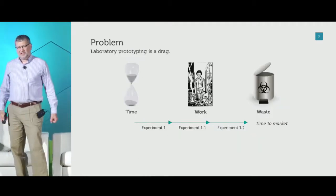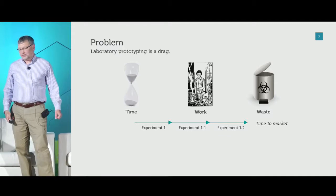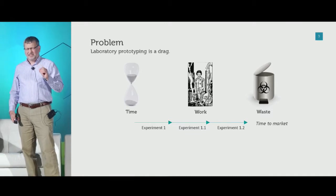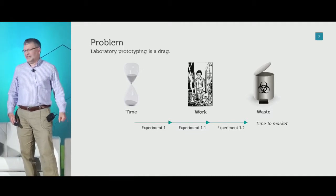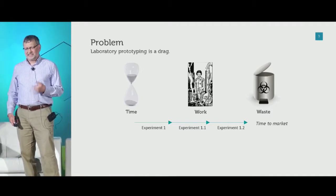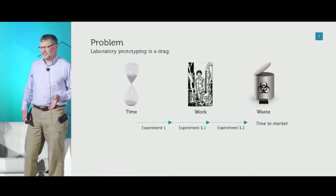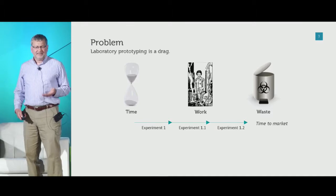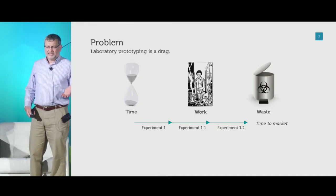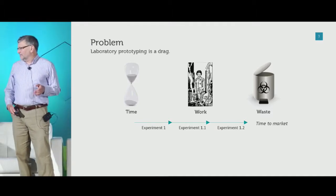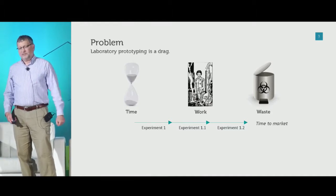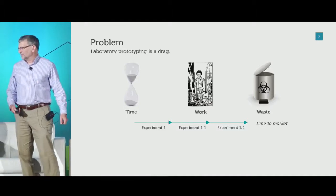They're going to have to prototype and get their product just right prior to mass production. The problem is that laboratory prototyping is pretty slow. Experiments in the laboratory take time — it takes several weeks to a month just to grow maybe a millimeter worth of tissue at best. During that time, you have to attend to these experiments, do the measurements, and you create a certain amount of waste. The time to market depends upon this learning process, which is limited by how fast you can perform those experiments.